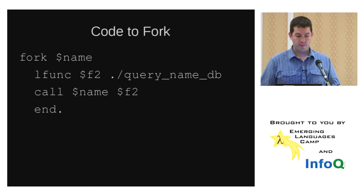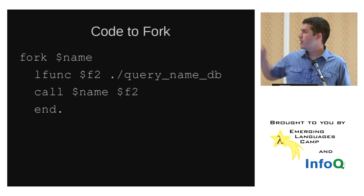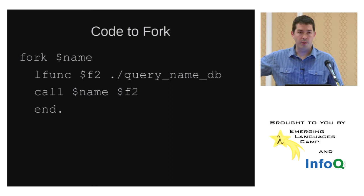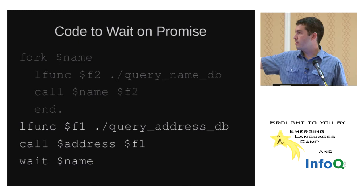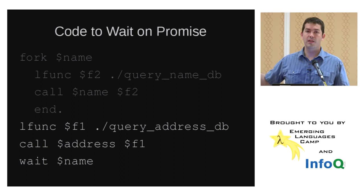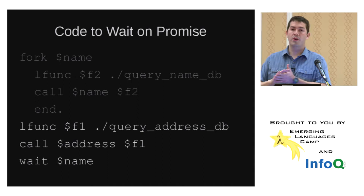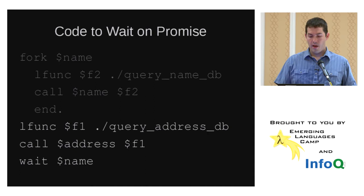Here's quick code to do that: fork, and then declare a promise named 'name' that this fork block will eventually set. It loads a function called query name database, calls it, and assigns the result to the name variable. Meanwhile, on the bottom, the main fork continues and says: query the address database and store it in the address variable. Then when done, wait on name. They go asynchronously or in parallel — the developer just says 'fork, go do this; fork, go do that' and hears back when they're done.